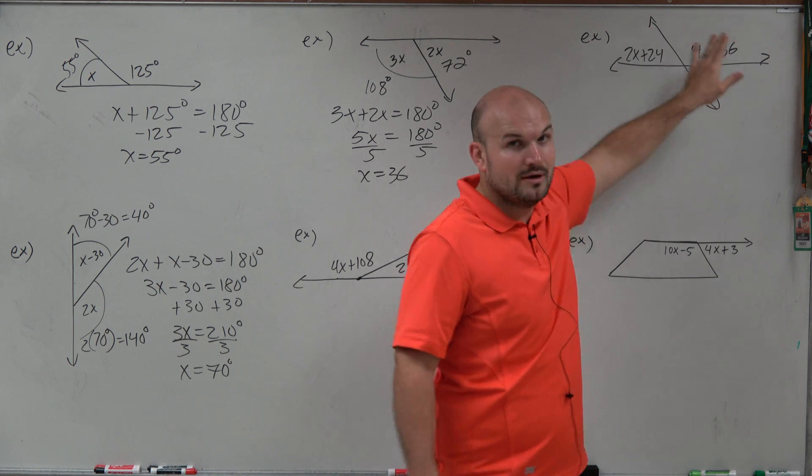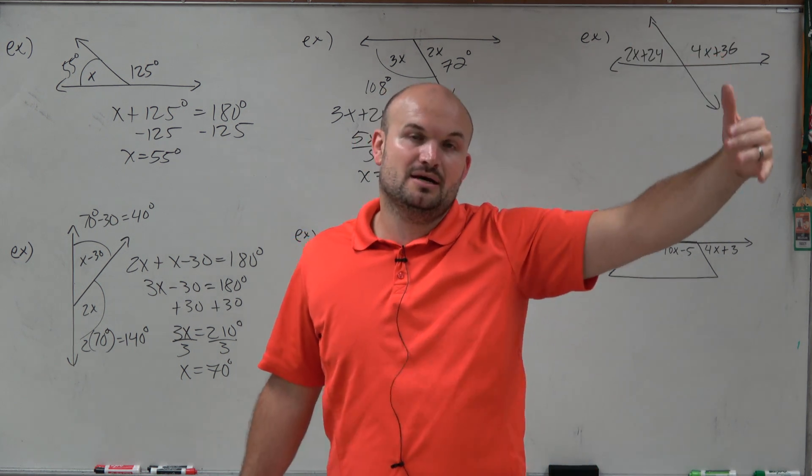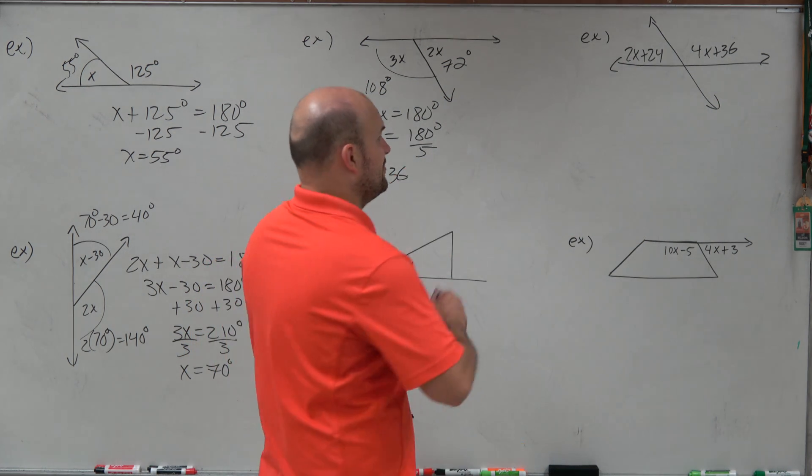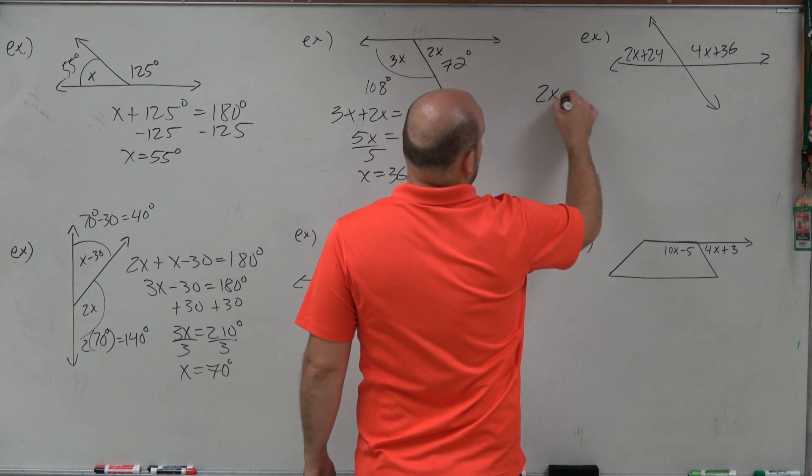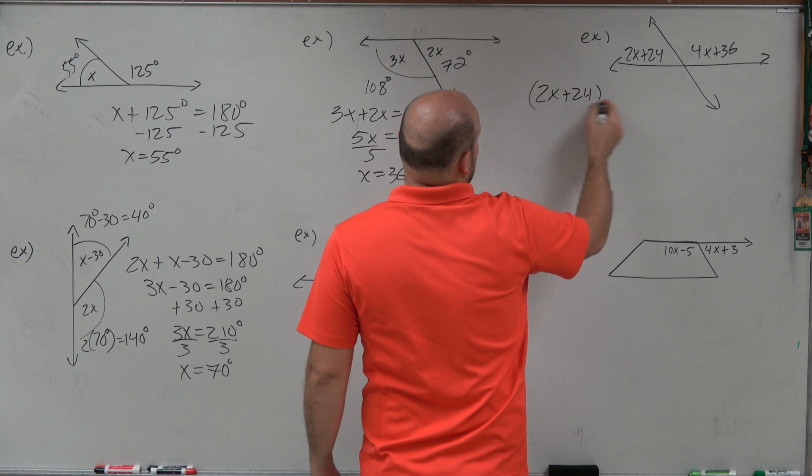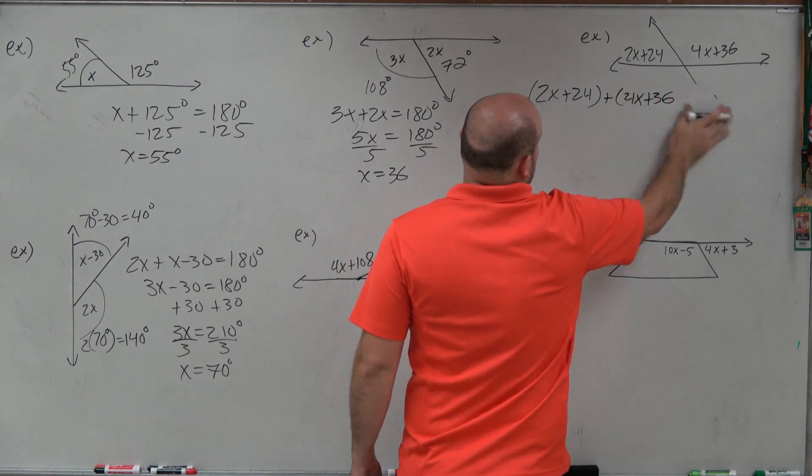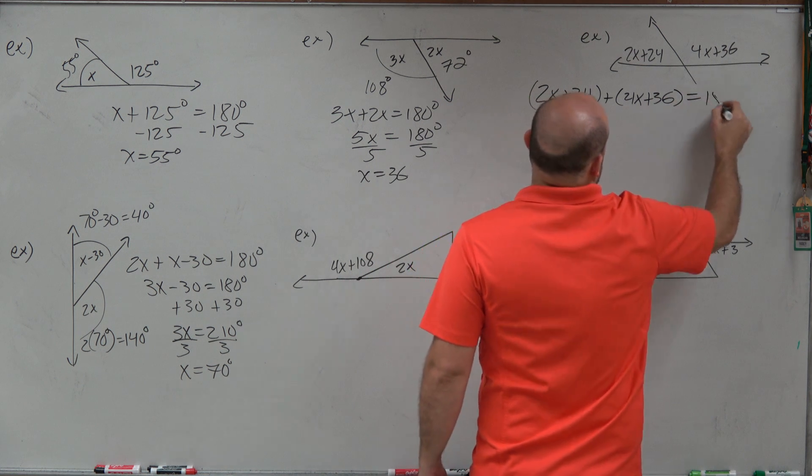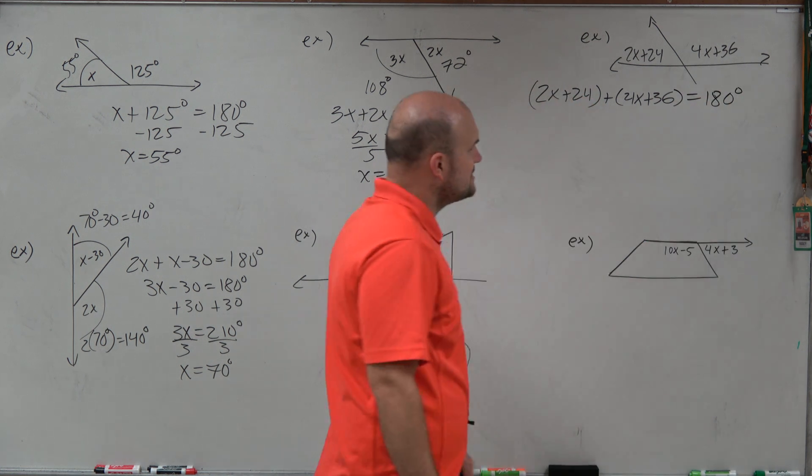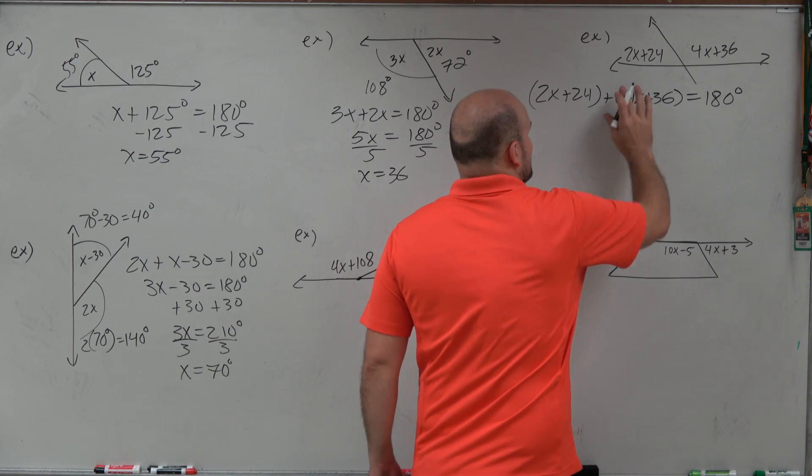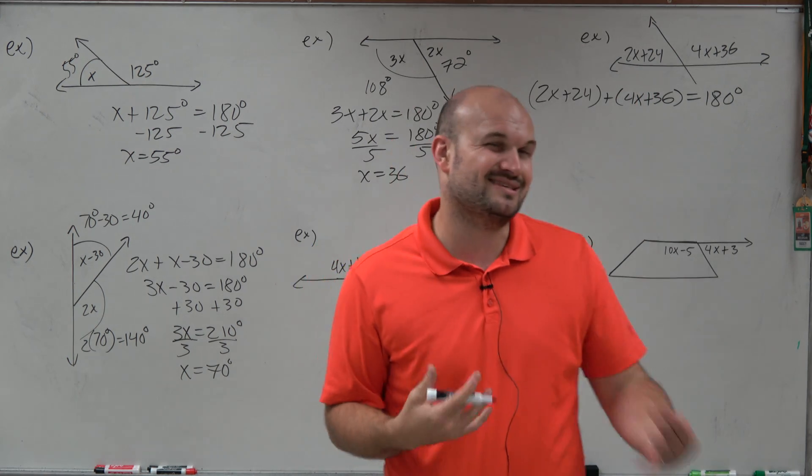However, these two angles are going to add up to make up a line. So therefore, they're supplementary. So therefore, I can say 2x plus 24. A lot of times when I'm adding multiple angles with expressions, I like to use parentheses. It's not really necessary. But I think when you're first getting used to this, it's kind of helpful.